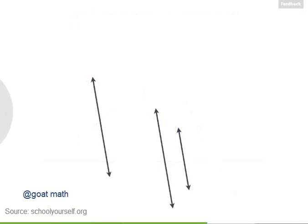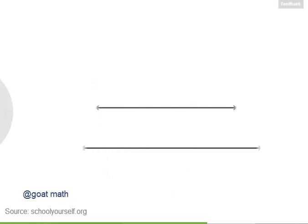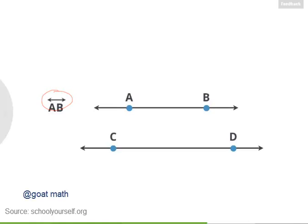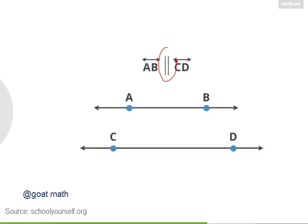Well done. So these three lines are all parallel to each other. No two of them intersect, and all three run in the same direction. Let's finish this lesson by looking at another way to write that two lines are parallel. So here are two parallel lines, and let's call two points on this line A and B, and two points on this line C and D. Then one name for this line is AB, with the line symbol written on top, and this is line CD. Now if we put two vertical parallel bars between the names of the two lines, that's a quick way to write down that line AB is parallel to line CD.